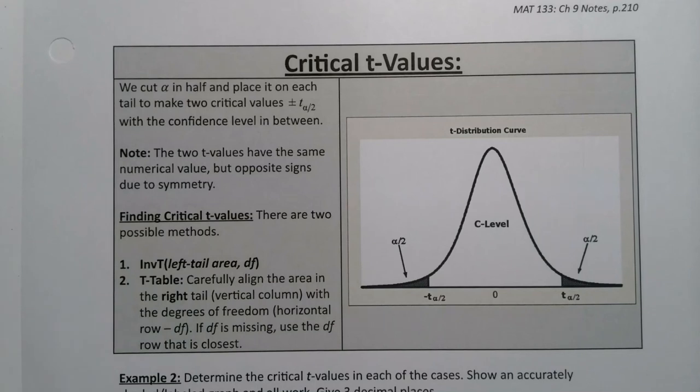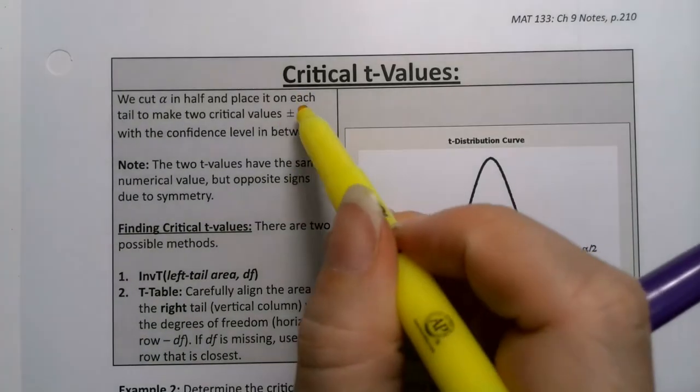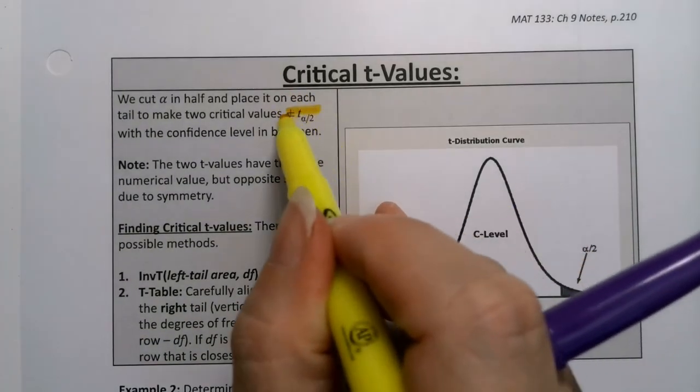Of course, now that we know what the t-curves are, we're going to have to be able to find the critical t-values that we need in order to be able to do the confidence interval piece.